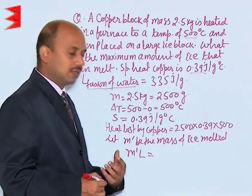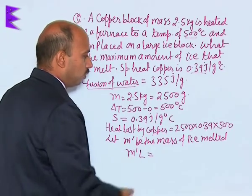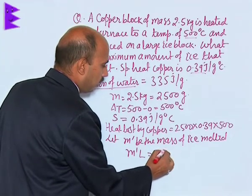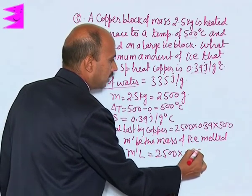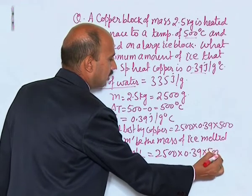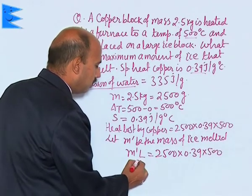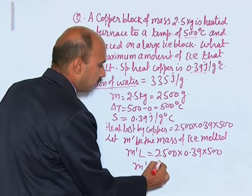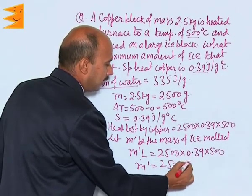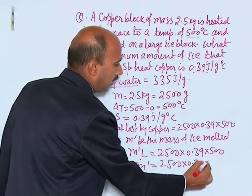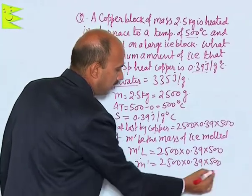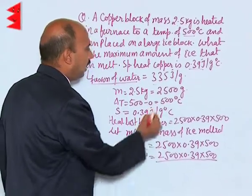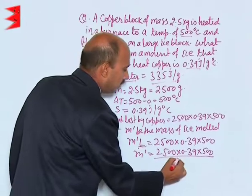That means heat gained by the ice to convert into water is equal to 2500 into 0.39 into 500. That will be m dash is equal to 2500 into 0.39 into 500 divided by L. L is given to you, this is 335.